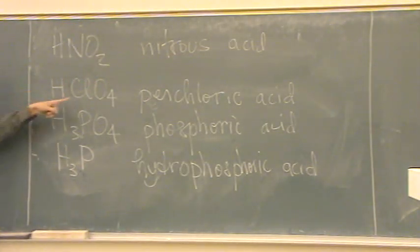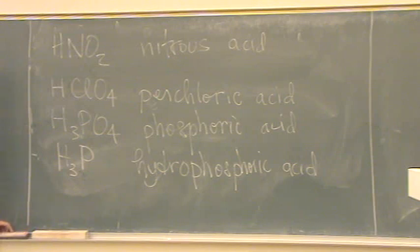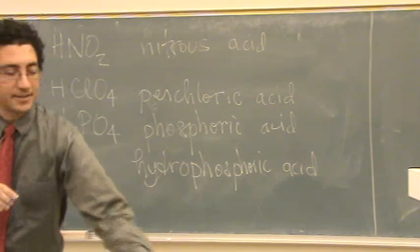Where in the other cases, an "-ate", goes to an "-ic". You've got to keep track of all those things. Okay. It goes to -ate goes to "-ic", and "-ite", goes to "-ous". Yes. "-ate", goes to "-ic", "-ite", goes to "-ous". Okay. Is that enough naming? Okay.